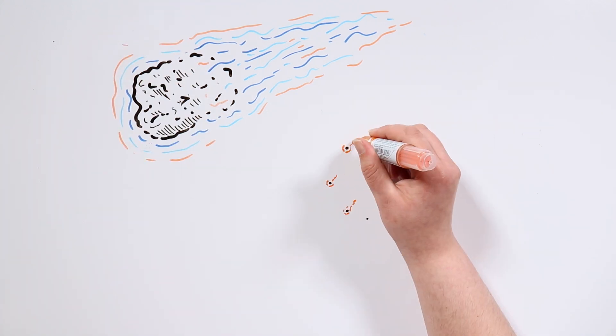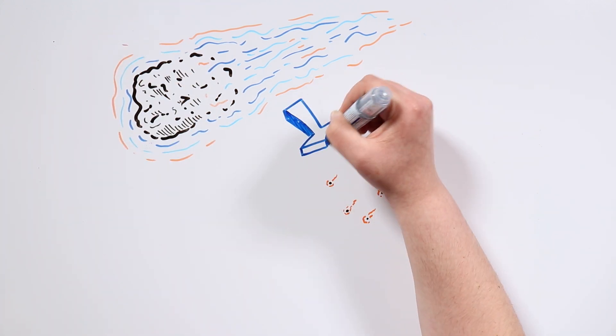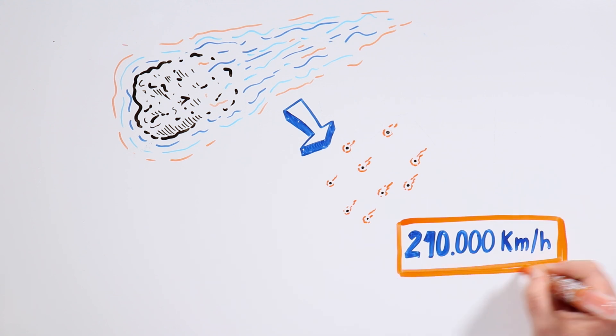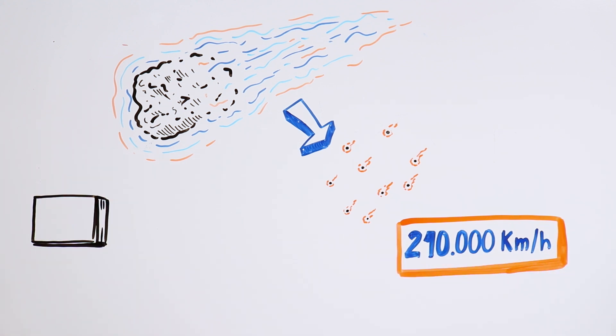Those particles coming from the meteor enter our atmosphere at about 210 thousand kilometers per hour. Their speed and friction are so high that they evaporate in an instant, producing a luminous effect.